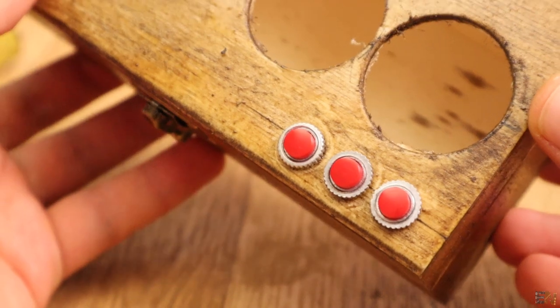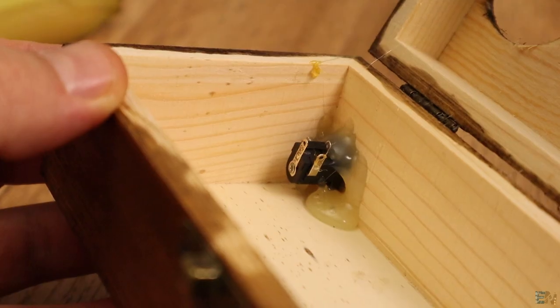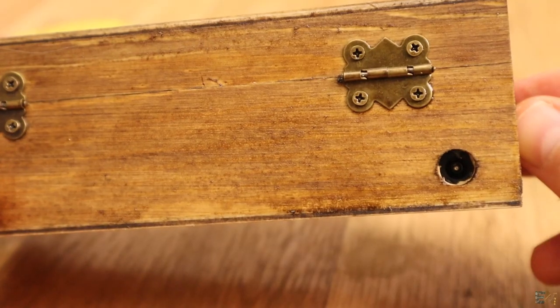I let it dry for a few minutes and now I could add the buttons and the plug. I add 3 push buttons on one corner that will be used to set the time. I also glue in place on the back of the case the DC plug using some hot glue.